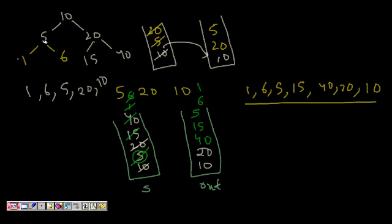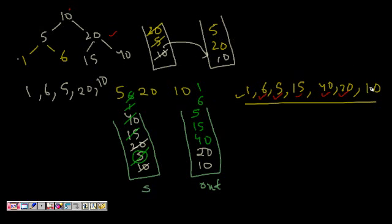So the final printed output is: 1, 6, 5, 15, 40, 20, 10 — and this is the correct post-order traversal. In post-order: from root go left all the way to 1, then right child 6, then 5, then go to root's right subtree — 15, then 40, then 20, then finally 10. Both left and right subtrees are done before printing the root. This is perfectly correct post-order traversal.